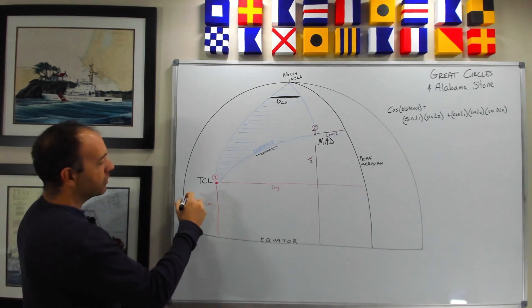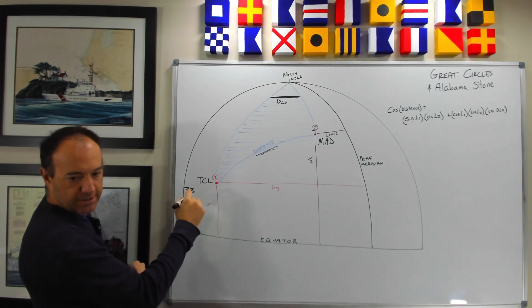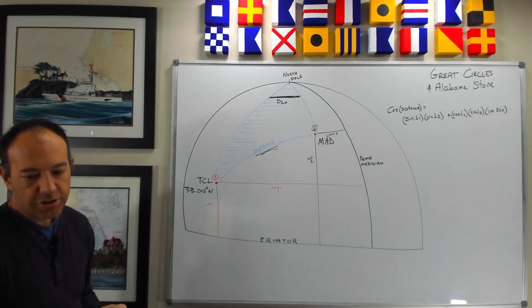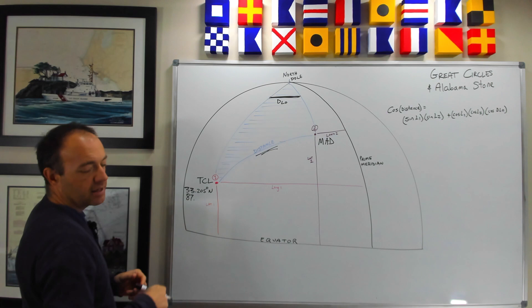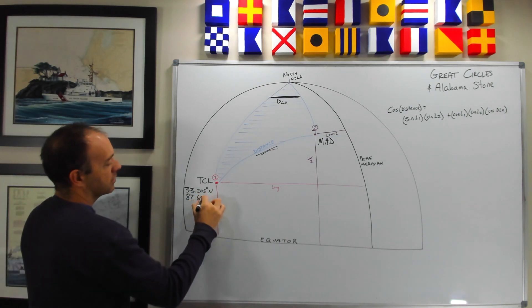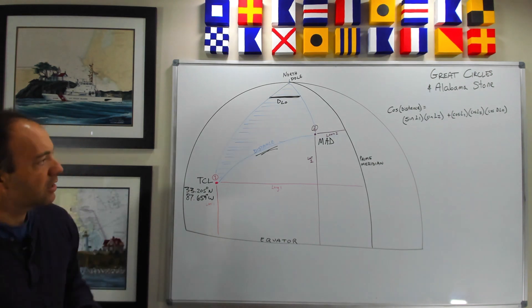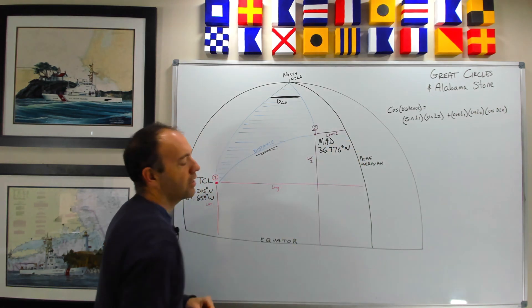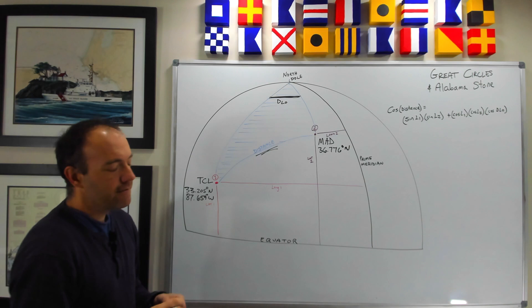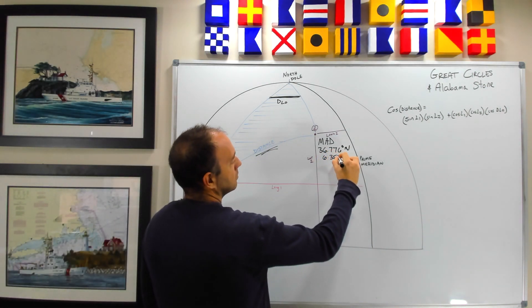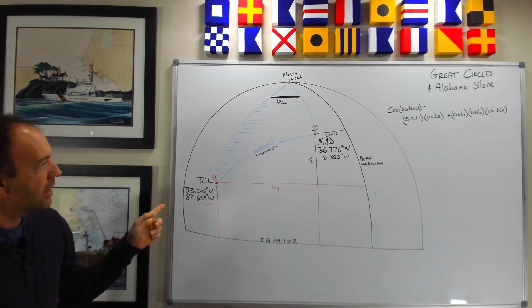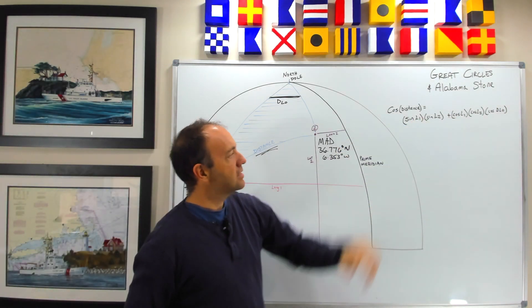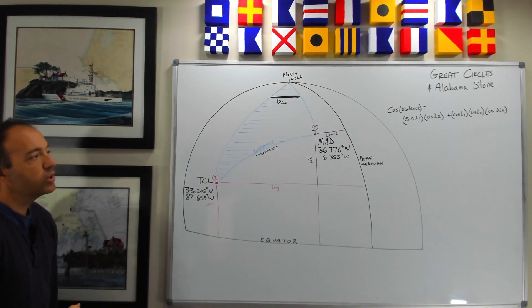the latitude is 33.205 degrees north and the longitude is 87.659 degrees west. Likewise for Madrid, Spain, the latitude is 36.776 degrees north and the longitude is 6.353. So we've got the latitude of Tuscaloosa, Alabama, the latitude and longitude of Madrid, Spain as well. And we can plug those into the calculator to figure out what the distance between those two points is.